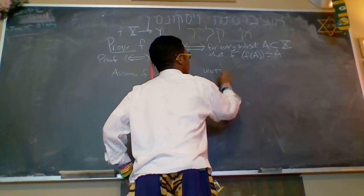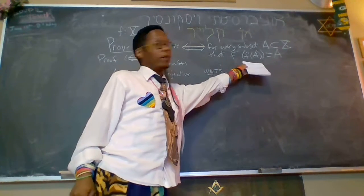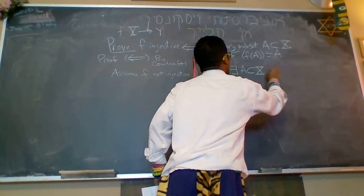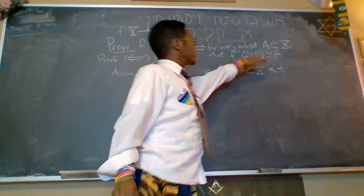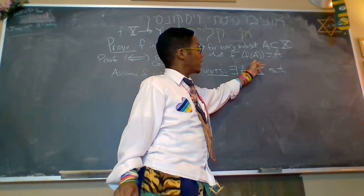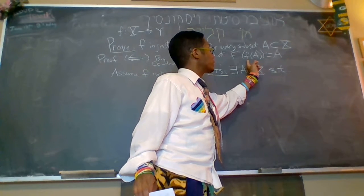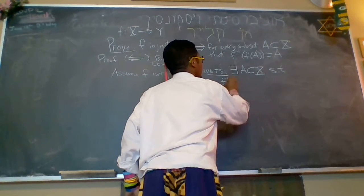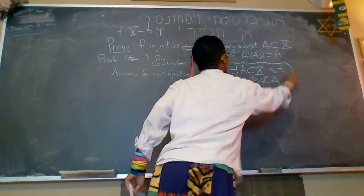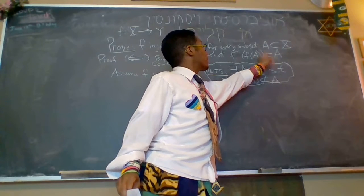We want to show the negation of this statement for every subset a of x that the following equality holds. We'll show that there exists a subset a of x such that, well, this not holding, we always have a contained inside of the pre-image of the image of a subset a. We always have that direction, regardless of that being injective or not. So if this doesn't hold, all we're saying is that this will not be, the left side will not be contained in the right side. So such that f inverse of f of a is not a subset of a. Okay? That's what we need to show. To say that this is not equal means that this in particular is not a subset of a.